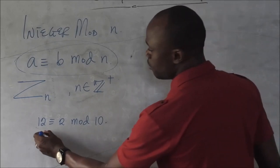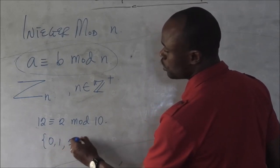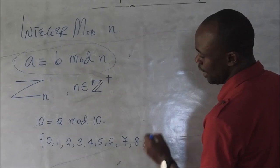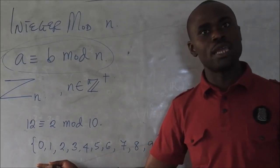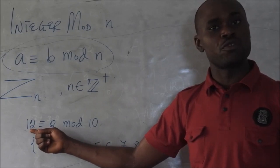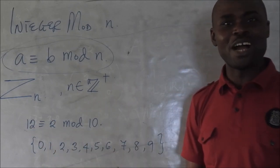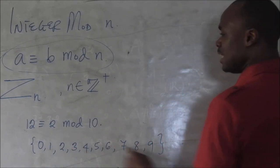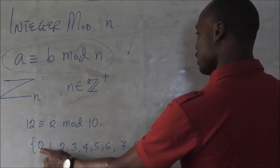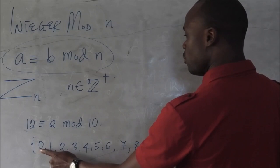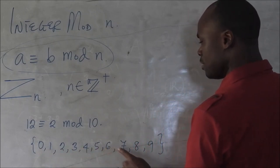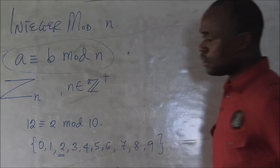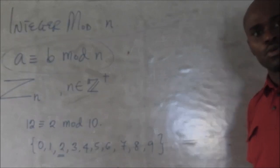In mod 10, you have 0, 1, 2, 3, 4, 5, 6, 7, 8, and 9 — these are the numbers in mod 10. If we count up to 12, we land on 2, so 12 is equivalent to 2 in mod 10.